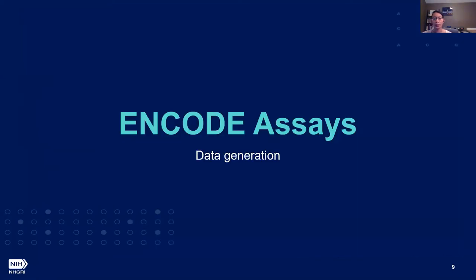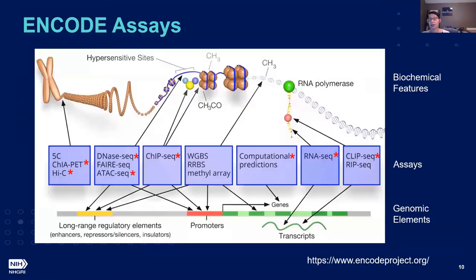Moving into the ENCODE assays with a focus on data generation and analyses: ENCODE has produced and continues to produce data from a broad range of high and lower-throughput biochemical assays and methods. Marked with a red asterisk are active ENCODE assays or methods.